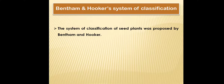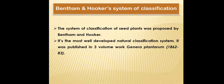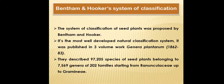The system of classification of seed plants was proposed by Bentham and Hooker. It is the most well-developed natural classification system. It was published in a three-volume work, Genera Plantarum, from 1862 to 1883. They described about 97,205 species of seed plants.